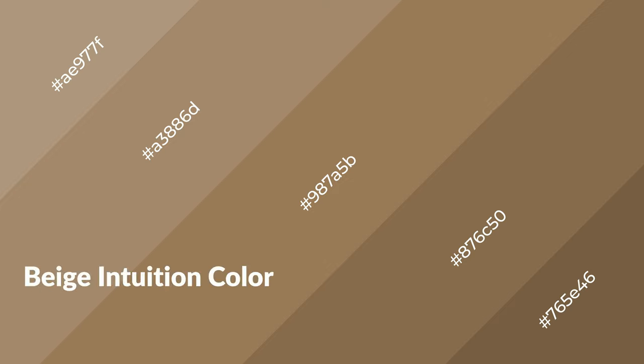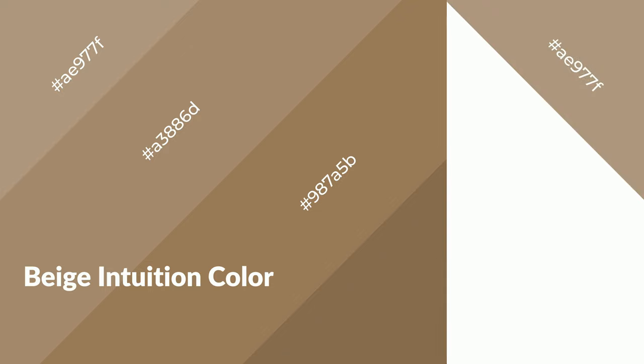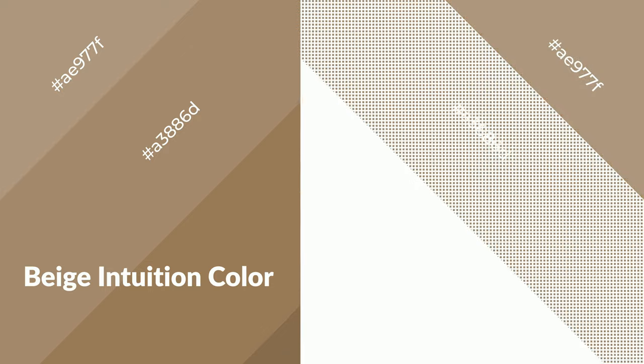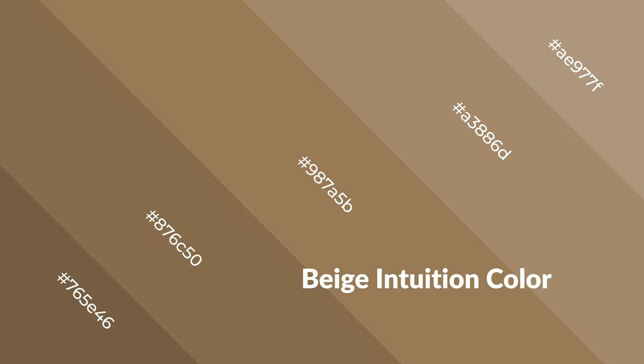Beige intuition is a warm color and it emits cozier and active emotions. Warm colors are symbols of warmth, fire, heat, and sunshine. It also evokes joy, passion, love, and even anger emotions. You can see them used in restaurants and gyms.